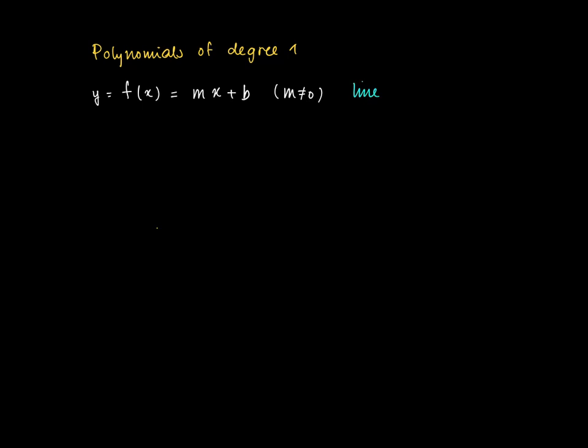Such that m is not equal to zero. So this is the linear function of x. Consider the graph of such a function. These polynomials of degree 1 have lines as their graph.